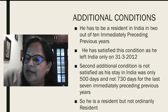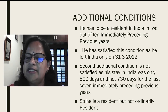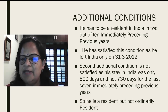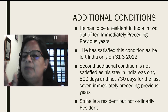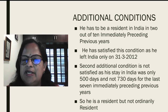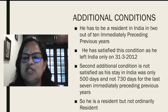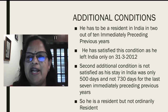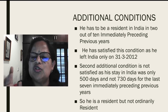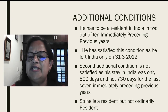For the second additional condition, he must have stayed in India for 730 days or more during the last 7 immediately preceding previous years. However, it is given that he was in India for only 500 days during those 7 years — not 730 days. So he has not satisfied the second additional condition. He satisfies both basic conditions but only one additional condition.